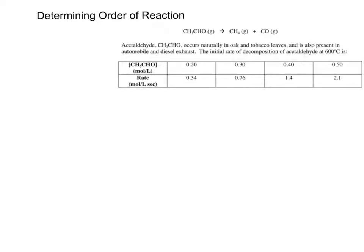Okay, in this video we're going to talk about how to determine the order of reaction. So let's look at this reaction where we have acetaldehyde decomposing to make methane and carbon monoxide. Acetaldehyde occurs naturally in oak and tobacco leaves and is also present in automobile and diesel exhaust. I know you don't actually care, but I feel obliged to tell you these things.